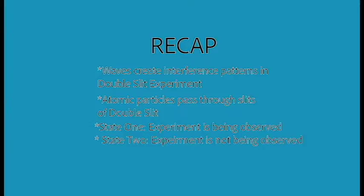Okay, recap. We know waves create an interference pattern and atomic particles just pass through the slits. But what about light? What does it behave like? Let's find out. But before we do so, keep in mind that this is a controlled experiment. We have two states: in one state we are observing the experiment, and in the other case we are not.